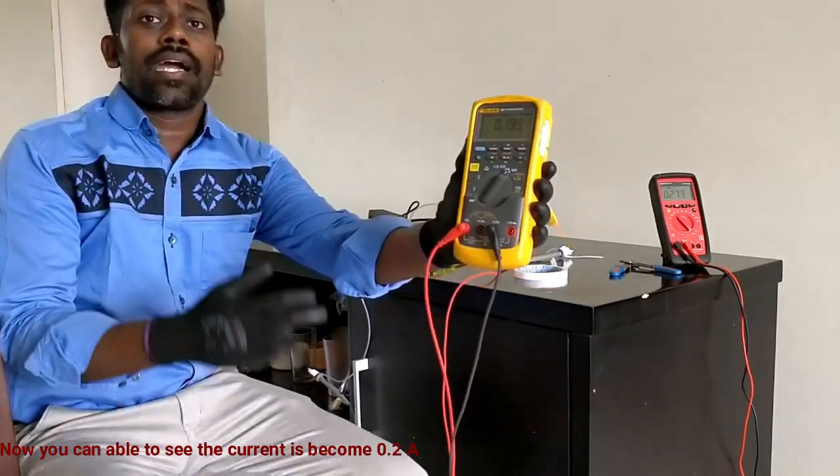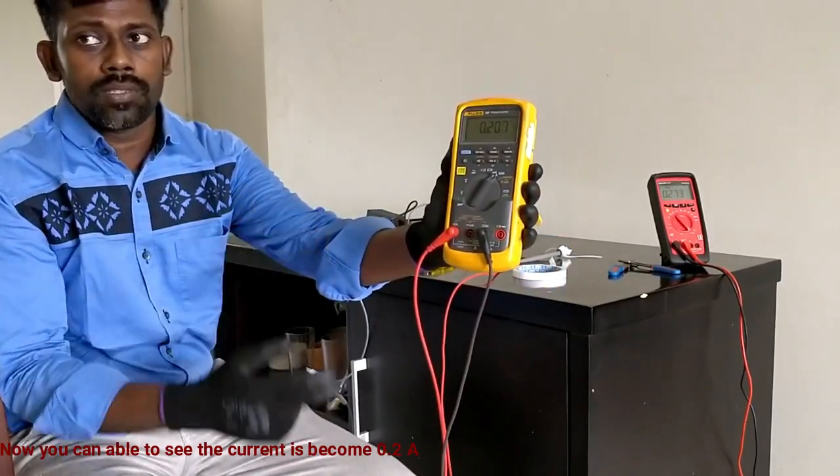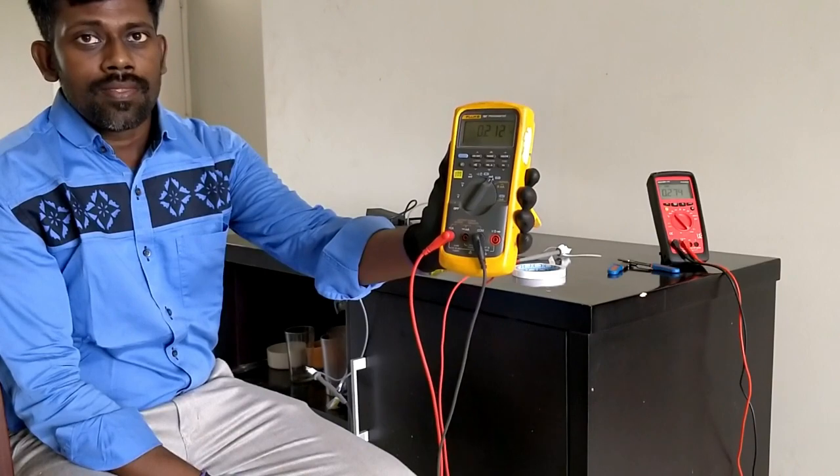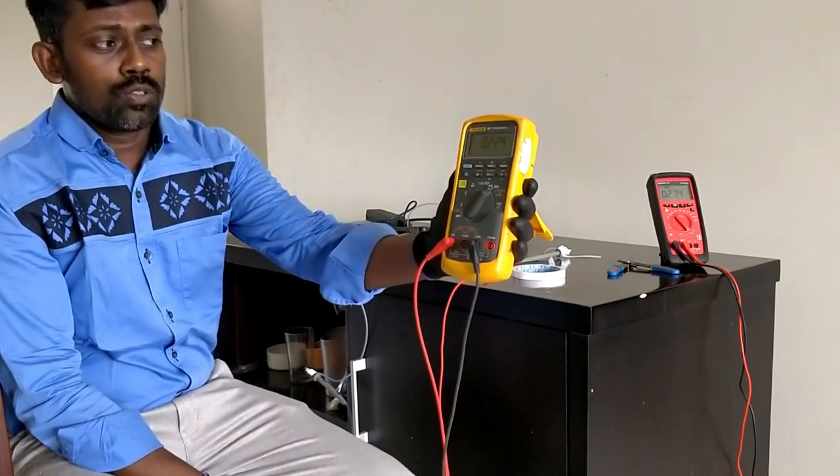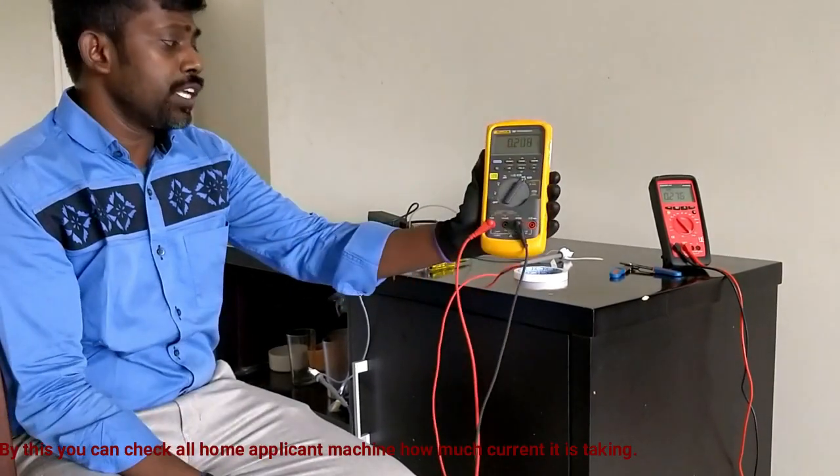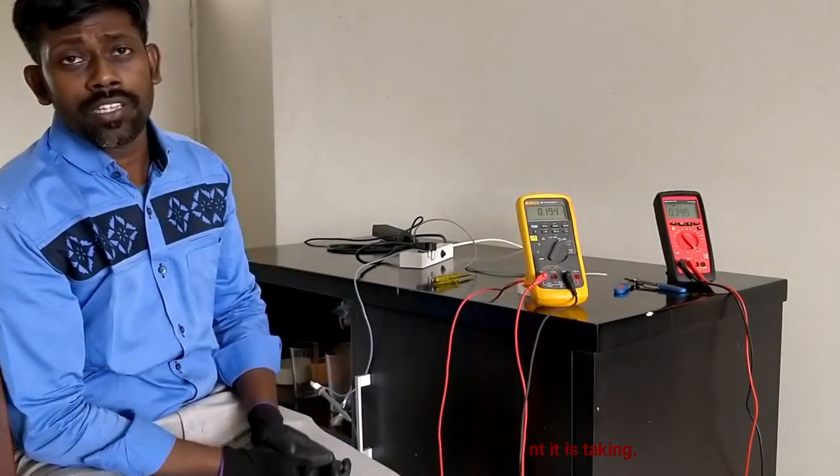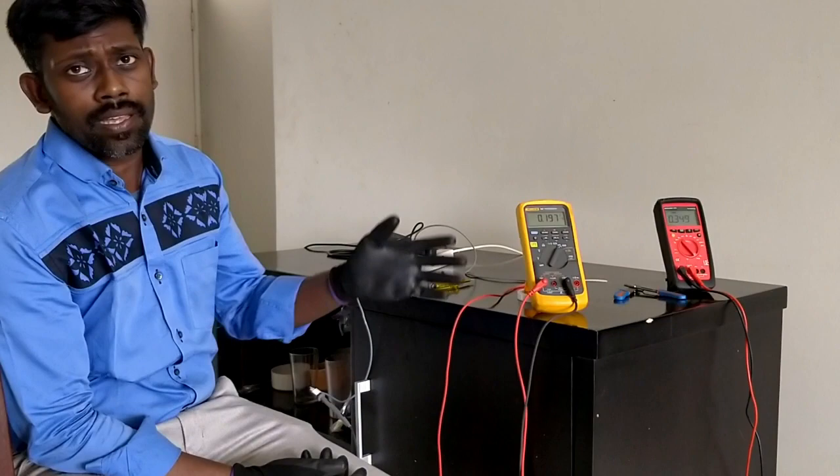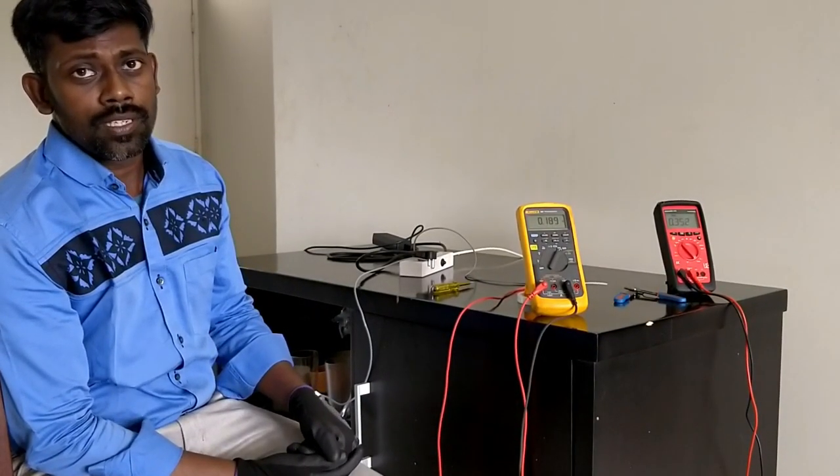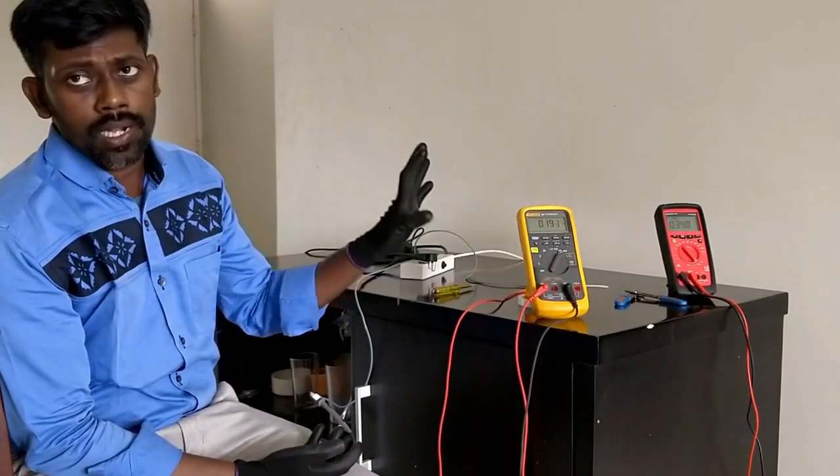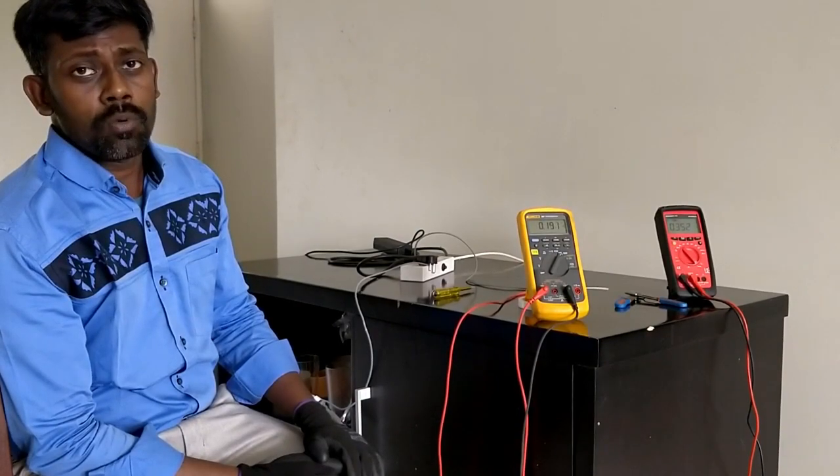Now you can see my current becomes 0.2 amps. So by this you can see your home appliance or any device. If you want to ensure how much current it is taking, you can simply do it yourself. By adding a simple multimeter, you can find the current.